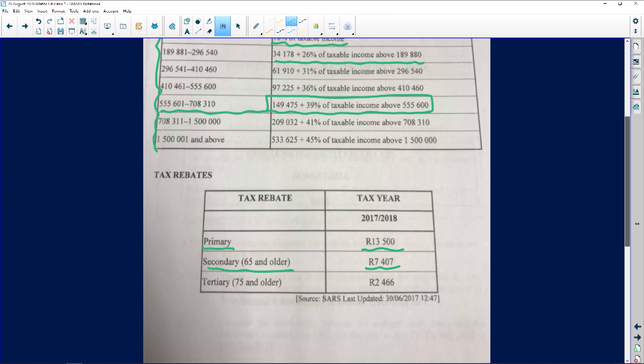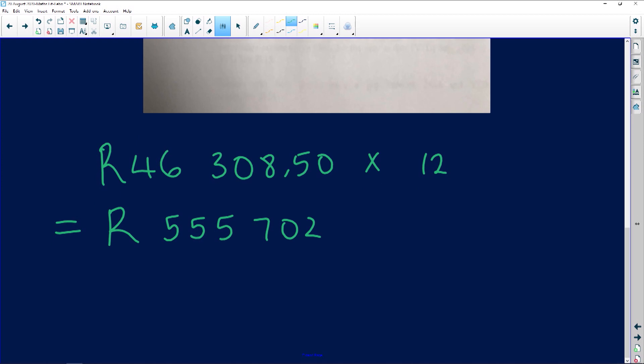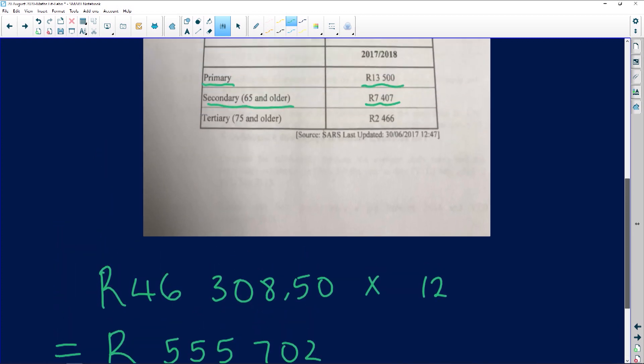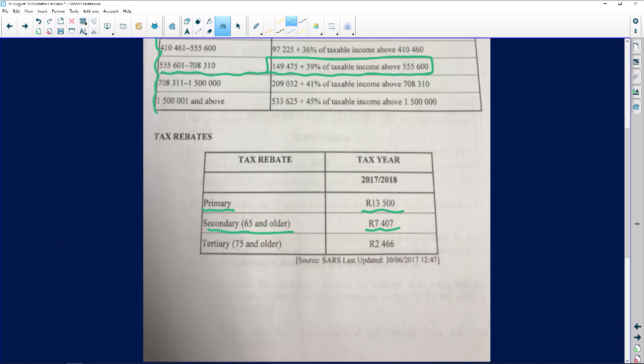Meaning we need to use this formula over here. So I'm going to put the formula in exactly as it is. Therefore the formula is going to look as follows. The formula is going to be the one that we have been given. So I'm going to just go up and down. R149,475.